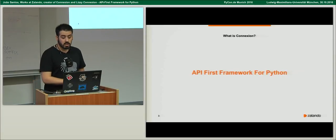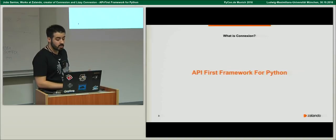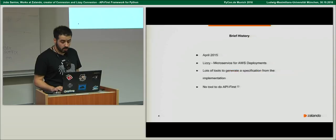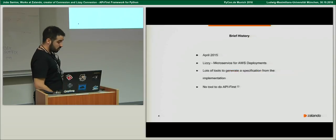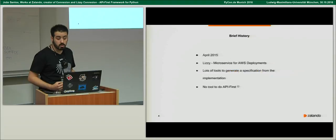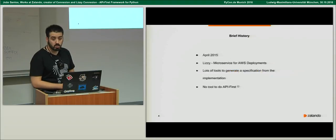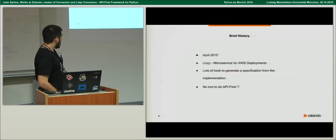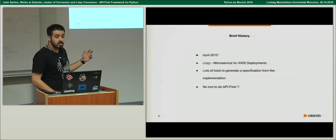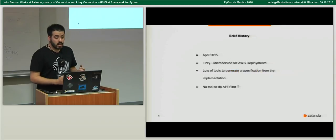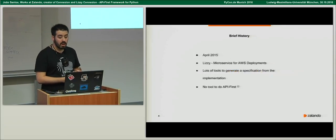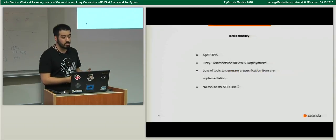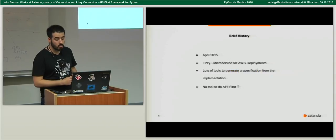What I'm going to present today is a framework that I created to do API-first for Python, built on top of Flask. I started this framework in April 2015 because I wanted to build a microservice to do AWS deployments, and Zalando had adopted a philosophy of API-first development based on what was back then still called Swagger — now it's called OpenAPI.